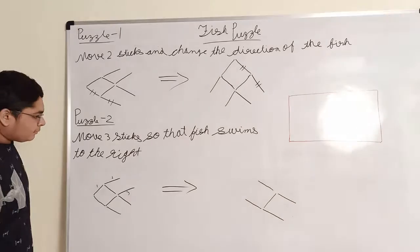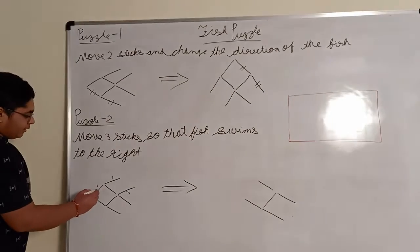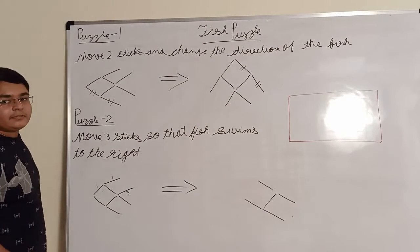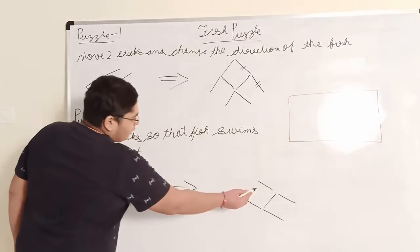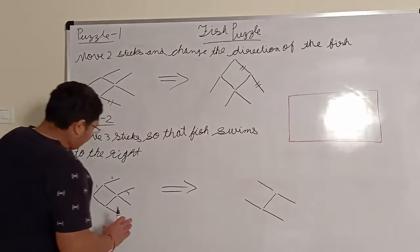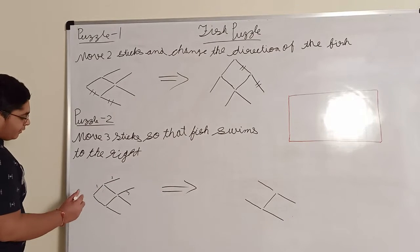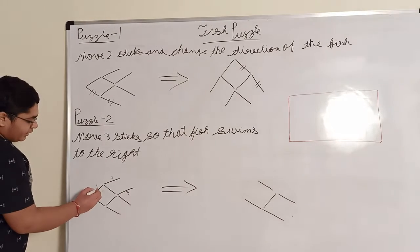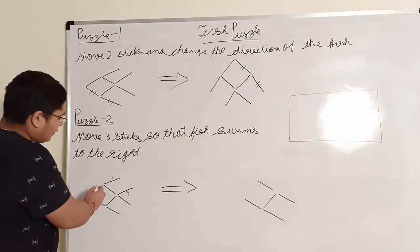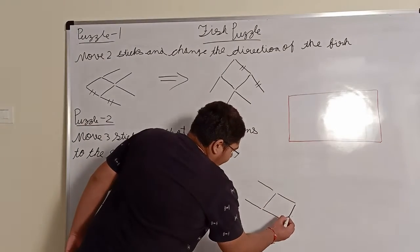And so, to solve this puzzle, first of all, you see that these five sticks are similar to here, which is same. We are moving the first stick from here to here.